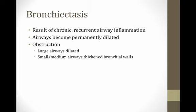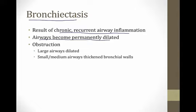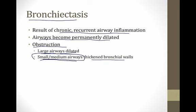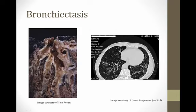The final cause of obstructive lung disease is bronchiectasis — the most difficult one to keep straight because it has many different etiologies. Bronchiectasis is when the airways become permanently dilated, usually the result of chronic recurrent airway inflammation. If you get many bronchial infections, you will eventually get dilated airways. It seems counterintuitive that dilated airways cause obstruction to flow, but even though the large airways are dilated, the small and medium airways have thickened bronchial walls, and since most of the bronchial tree is small and medium airways, the predominant physiologic effect is obstruction.